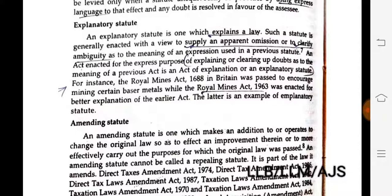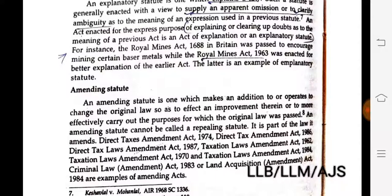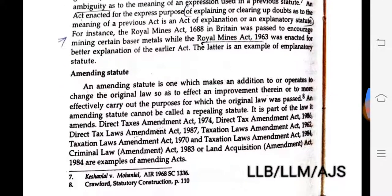Explanatory statute. An explanatory statute is one which explains the law — enacted with a view to supplying apparent omissions or to clarify the meaning of an expression used in a previous statute. An act enacted for the express purpose of explaining or clearing up doubts as to the meaning of a previous statute is an explanatory statute. For instance, the Royal Mines Act 1688 in Britain was passed to clarify mining of certain base metals, and the subsequent act passed for better explanation of the earlier act is an example of an explanatory statute.